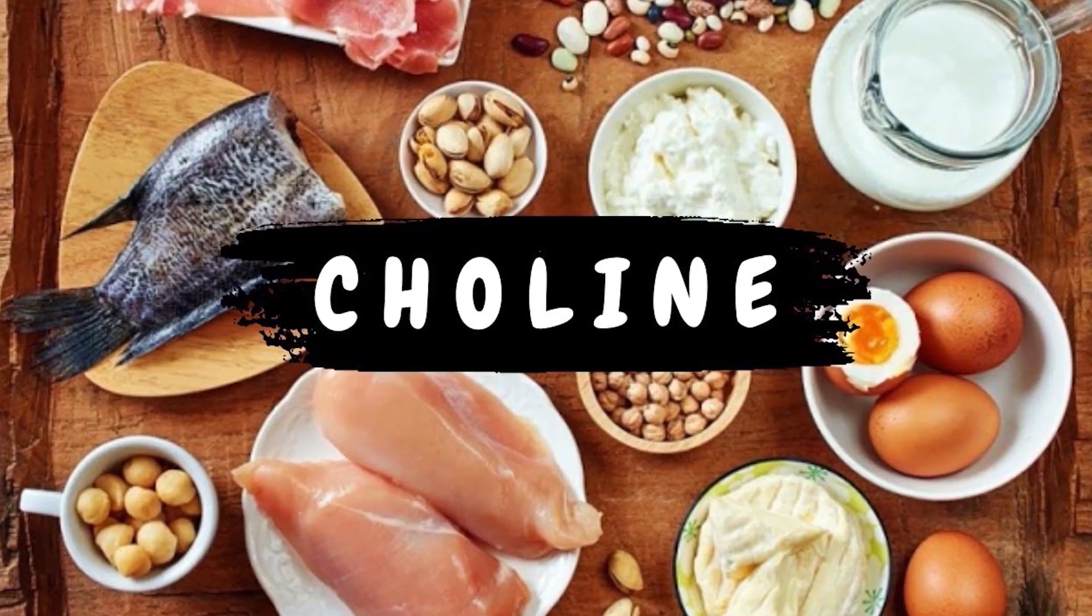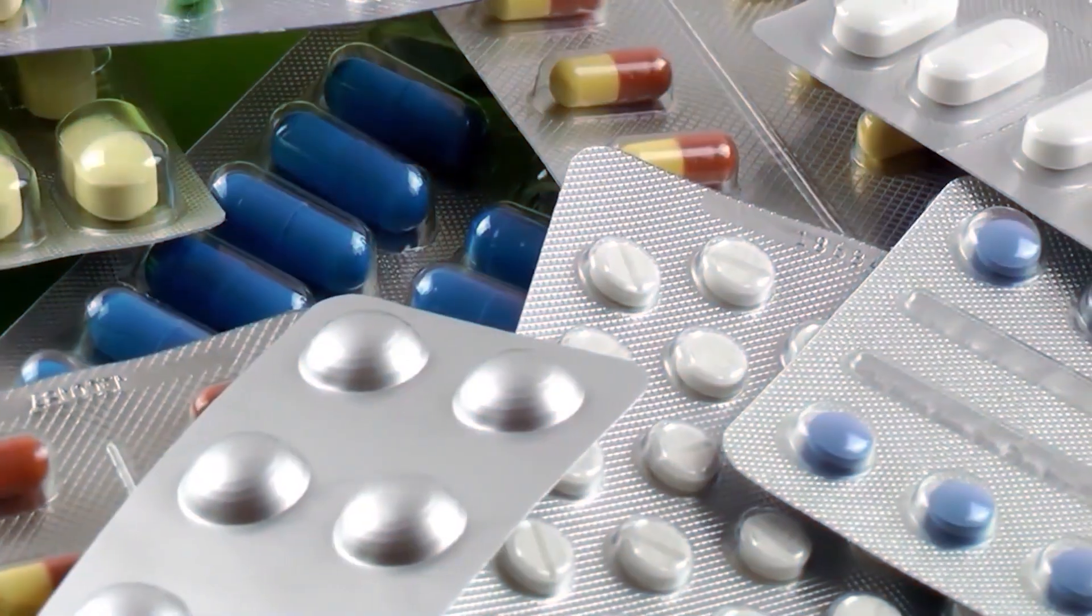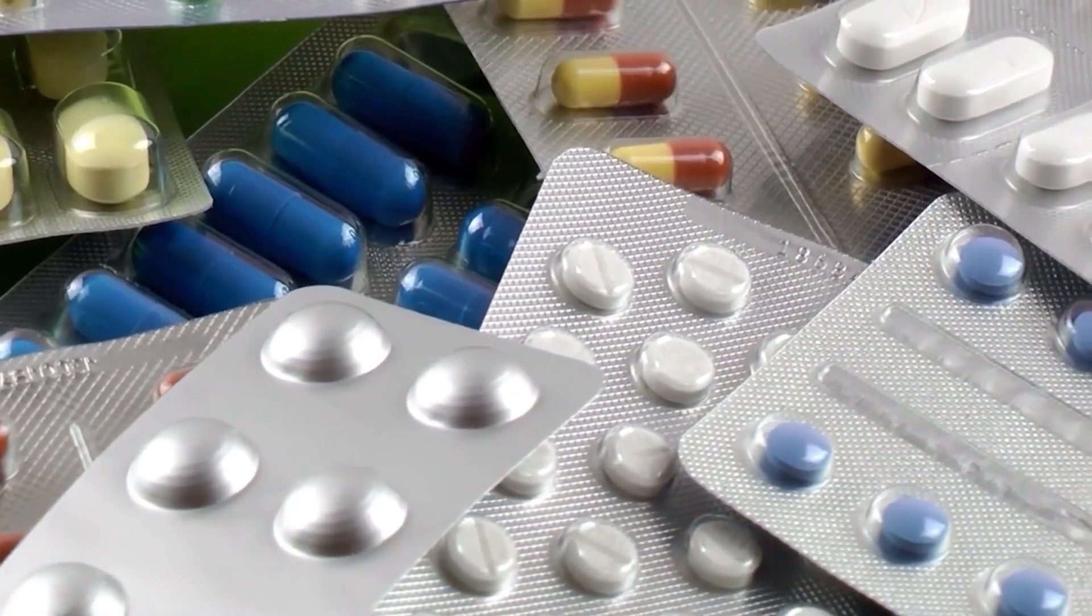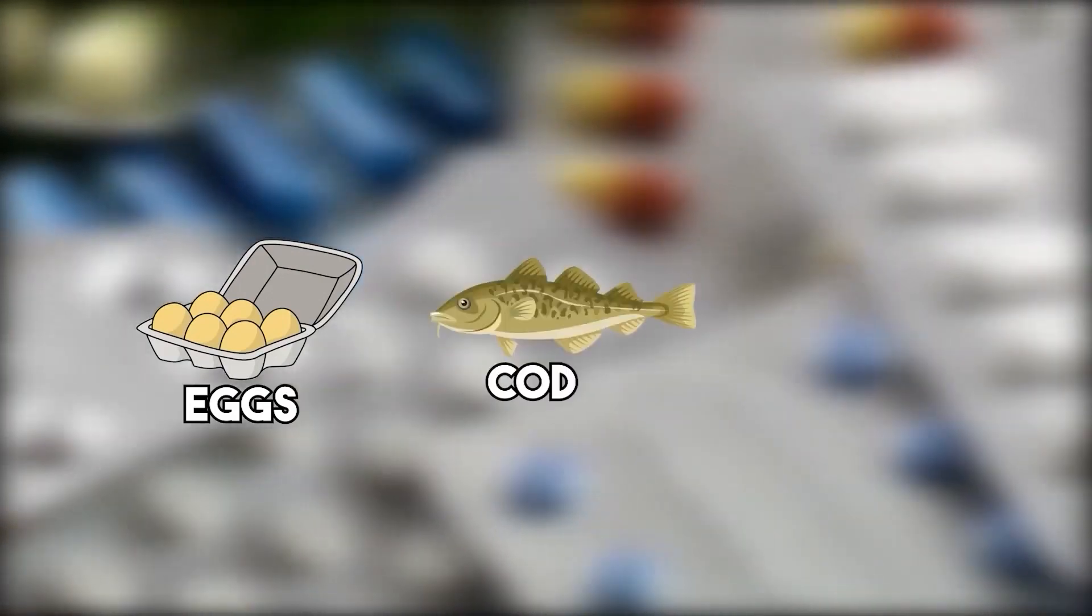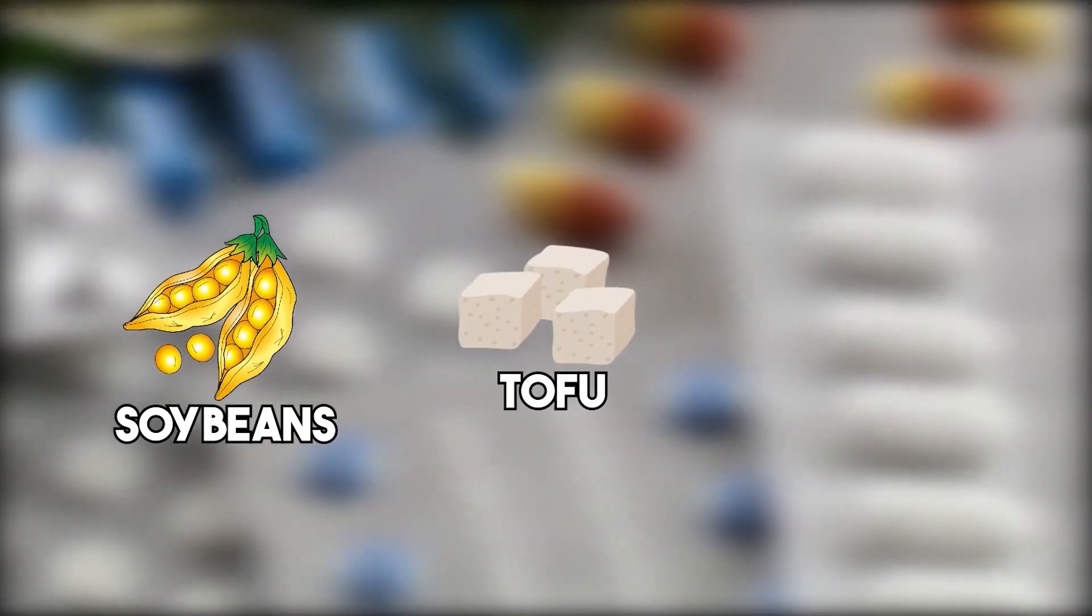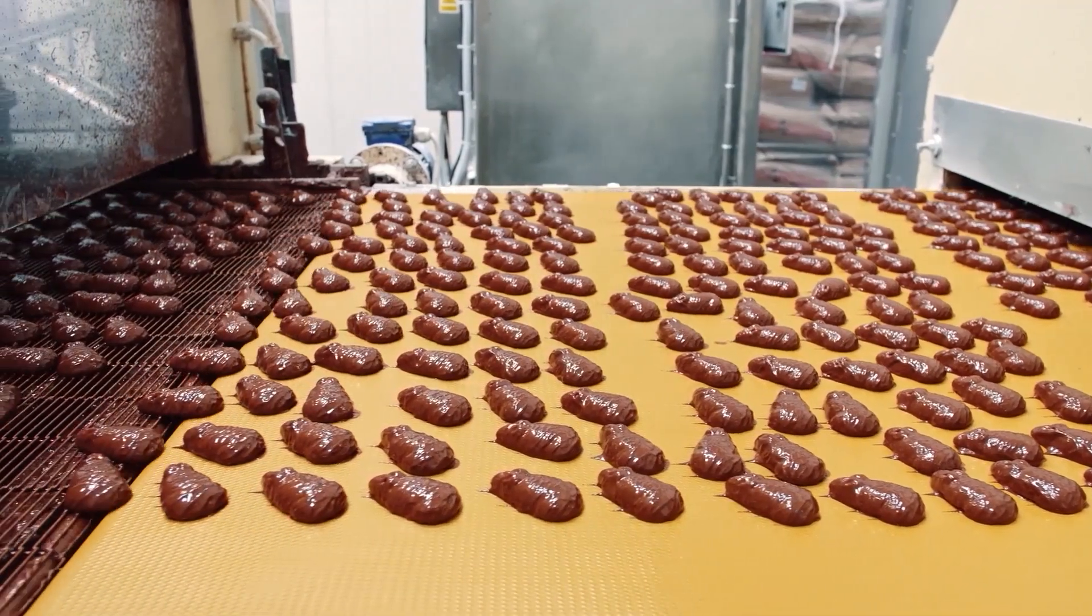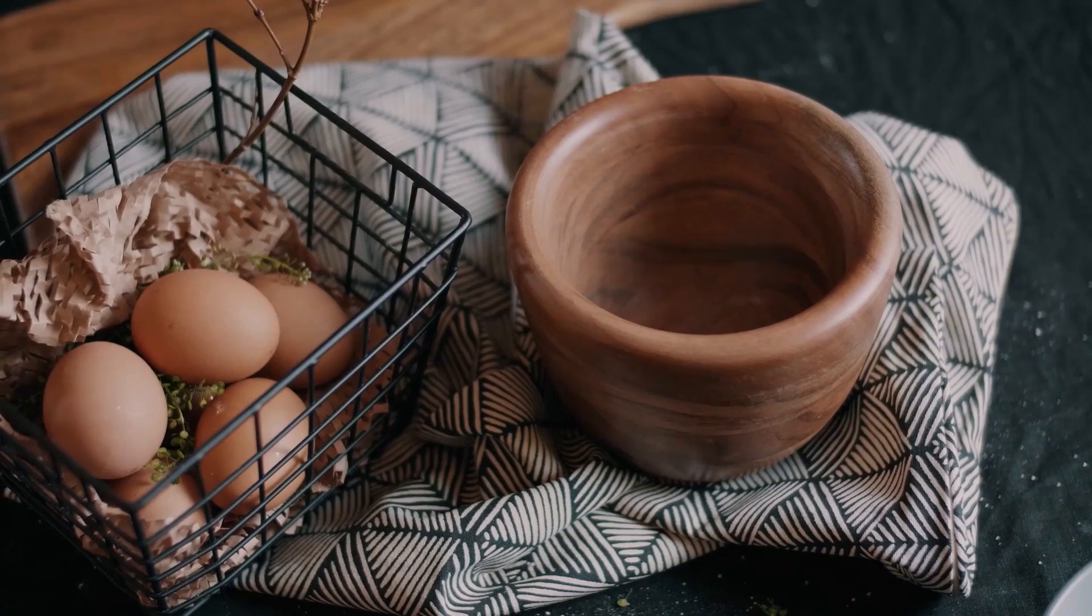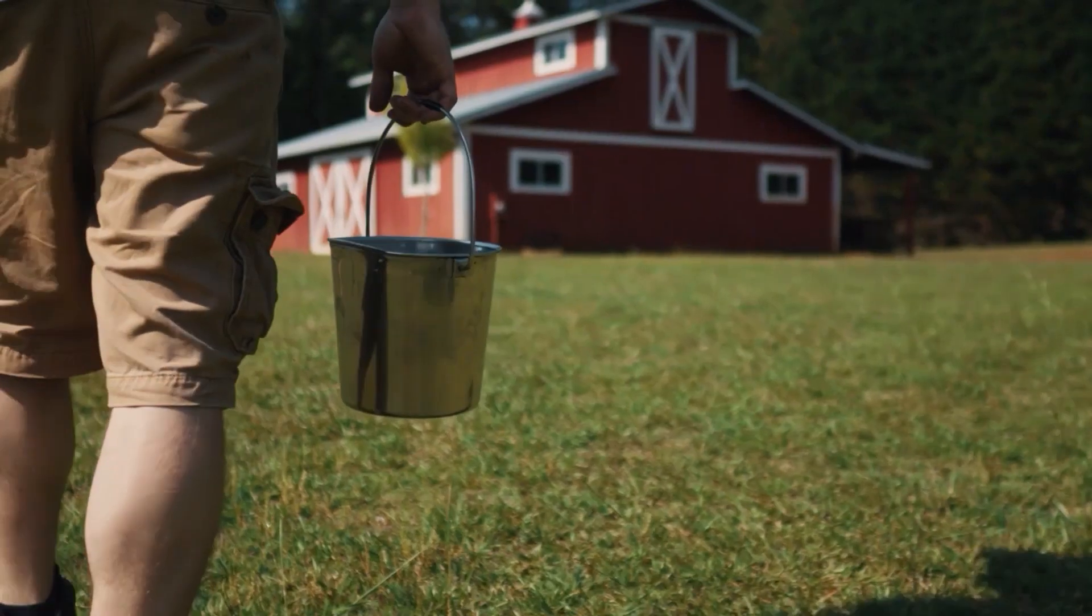Research shows that choline offers protection against liver damage caused by alcohol, certain medications, and poor dietary habits. To get enough choline in your diet, try including eggs, fatty fish like salmon, cod, and tuna, soybeans, tofu, nuts, and seeds. You can also get choline by consuming beef liver, organ meats, pasture-raised eggs, cauliflower, broccoli, brussels sprouts, cabbage, and grass-fed dairy.